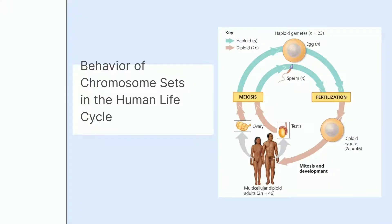Selanjutnya kita akan membahas human life cycle. Human life cycle diawali dengan laki-laki dan perempuan yang masing-masing akan mengalami meiosis, di mana jumlah kromosom yang tadinya diploid sejumlah 46 akan menjadi haploid sejumlah 23. Proses ini terjadi di gonad atau testis pada laki-laki dan di ovarium pada perempuan. Setelah itu terjadi fertilisasi, dan dari fertilisasi ini akan terbentuk zigot diploid dengan 23 kromosom dari laki-laki dan 23 kromosom dari perempuan. Zigot ini akan berkembang melalui proses mitosis menjadi individu baru dengan kromosom diploid berjumlah 46.